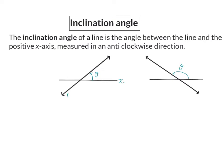Here we can see that if we have a gradient that is positive — bigger than zero, meaning it's an increasing line — the angle of inclination will always be between zero and 90 degrees. And if we have a negative gradient, or an m value smaller than zero, the angle of inclination will always be between 90 degrees and 180 degrees.